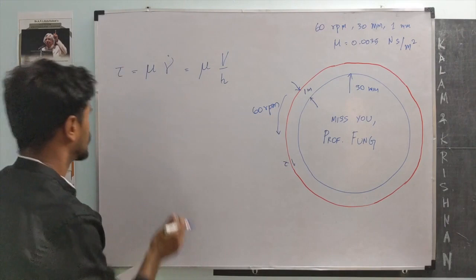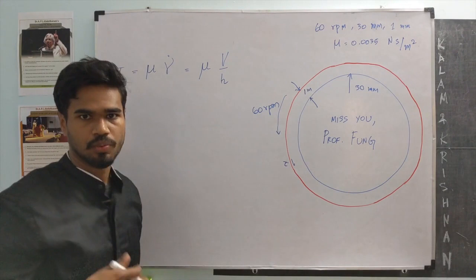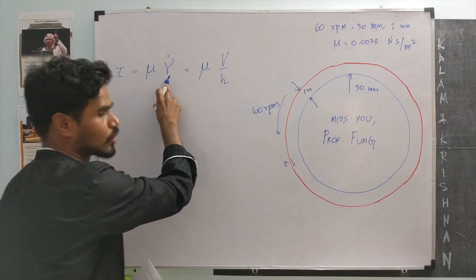Shear stress is defined by viscosity times rate of shear strain. The only trick here is to recognize that the rate of shear strain is also the velocity gradient. So, what is the velocity gradient here?